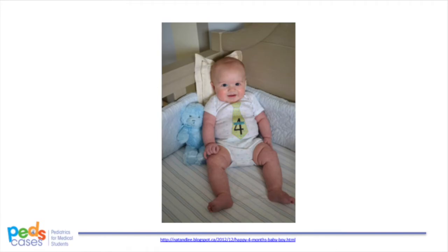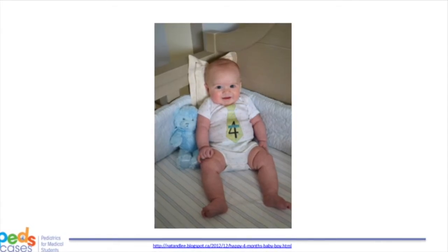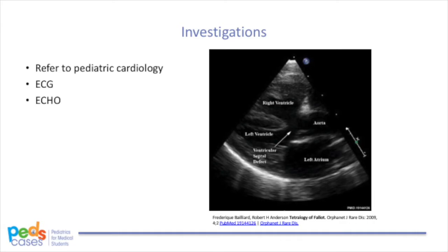Let's think about Josh again. We have established that his clinical presentation is highly suspicious for Tetralogy of Fallot. Regardless of the underlying diagnosis, suspected cyanotic congenital heart disease or concerns regarding a pathological murmur require prompt evaluation by pediatric cardiology and evaluation with an echocardiogram or echo. An echo allows for identification of the cardinal features of Tetralogy of Fallot, including the degree of obstruction of the right ventricular outflow tract. ECGs are valuable tools in assessment of congenital heart disease, but are not sufficient alone for diagnosis. Please note, a chest x-ray does not need to be performed for children with a murmur unless there is respiratory distress, as it is neither sensitive nor specific.